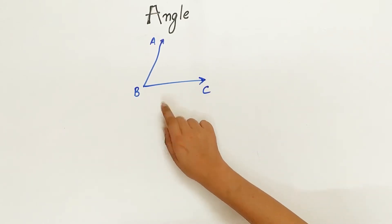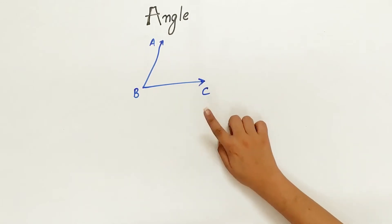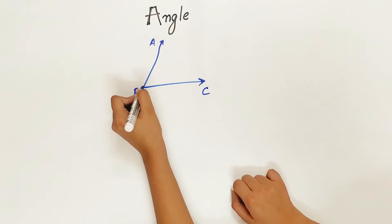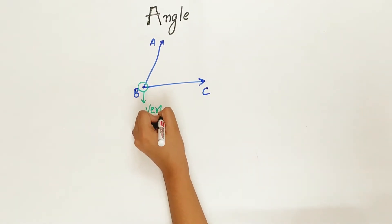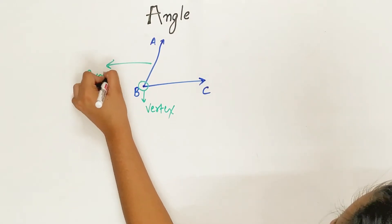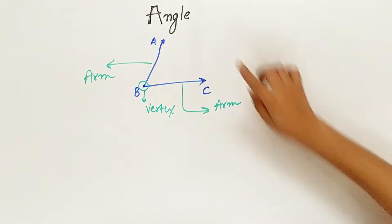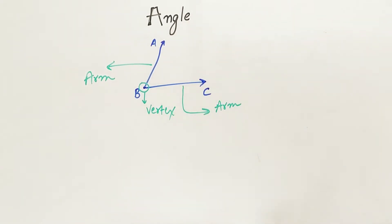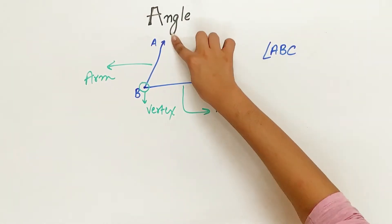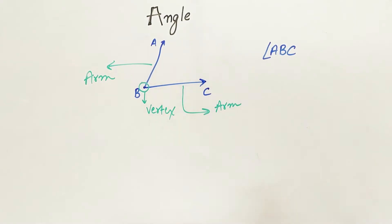This is an angle. An angle is formed when two rays, BA and BC, originate from the same point. This point is known as the vertex. BA and BC are the arms of angle ABC, which is denoted by angle ABC. The vertex should always come in the middle.